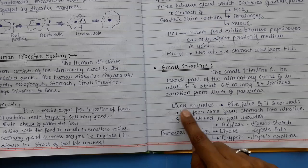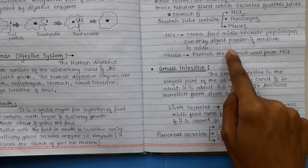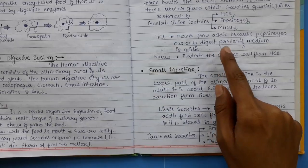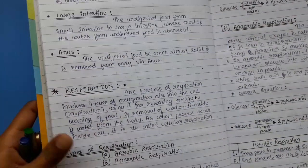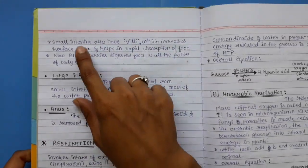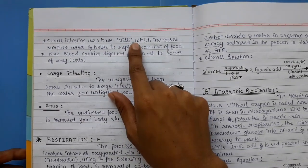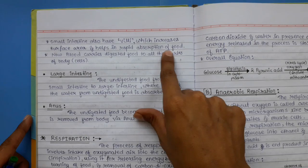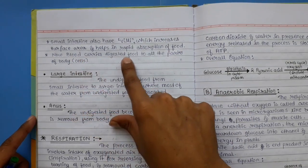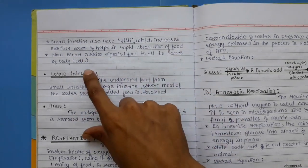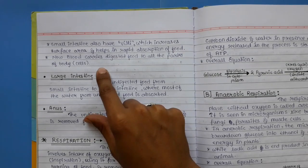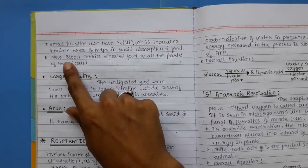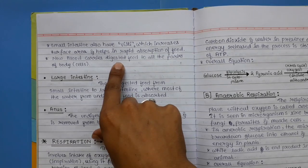To summarize: bile juice from the liver neutralizes the acidic food coming from the stomach and converts it to an alkaline medium. The small intestine also has villi, which increase the surface area and help in rapid absorption of digested food. Blood carries the digested food to all parts of the body.